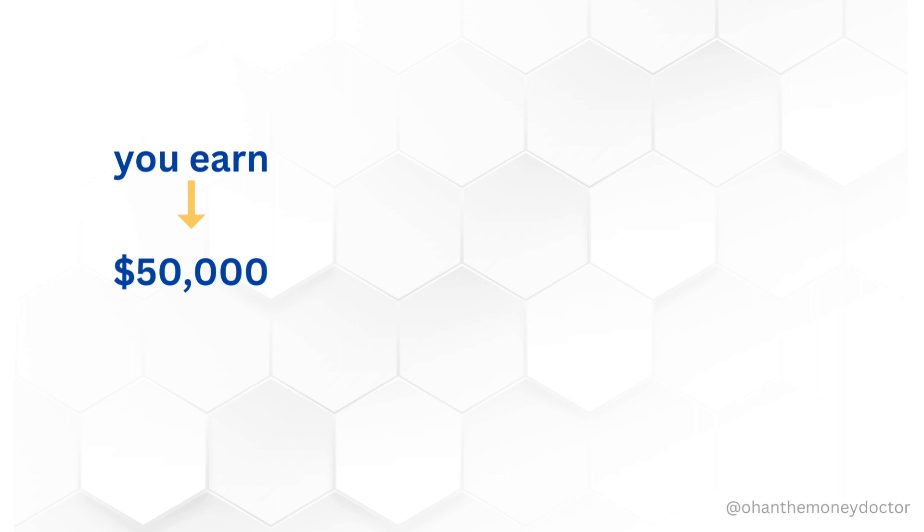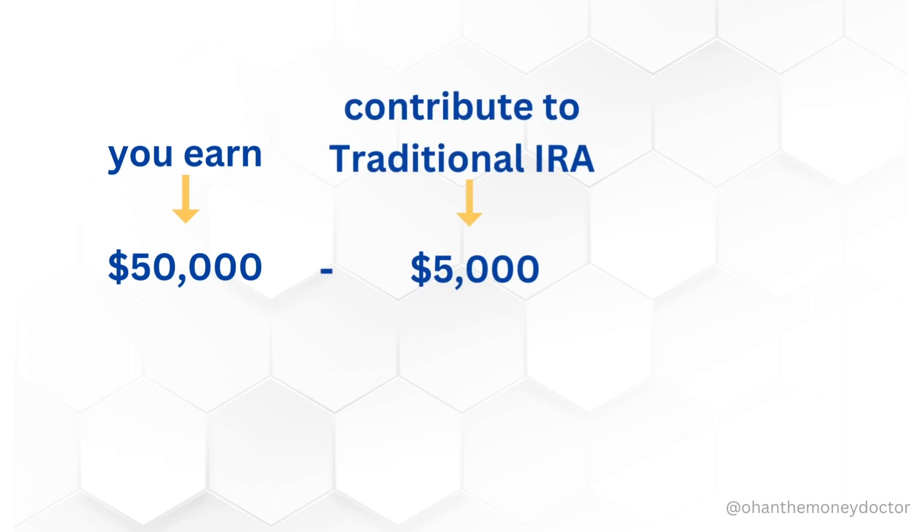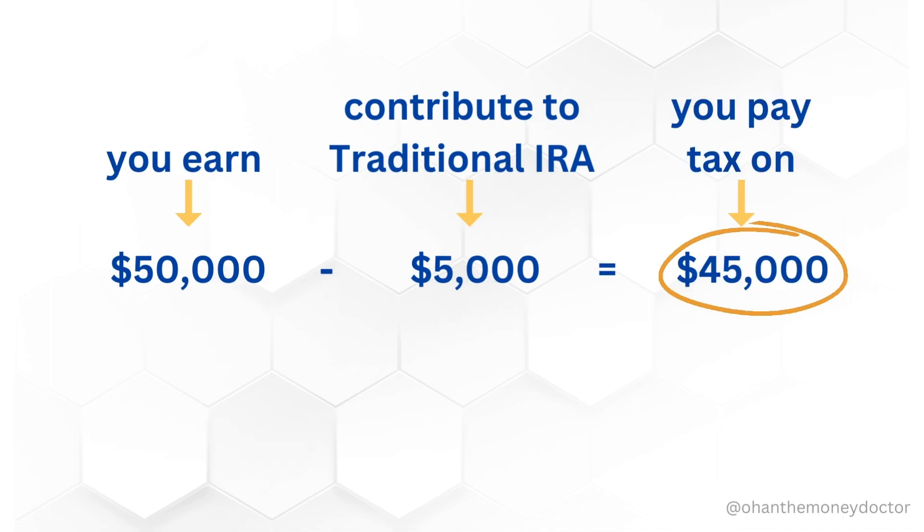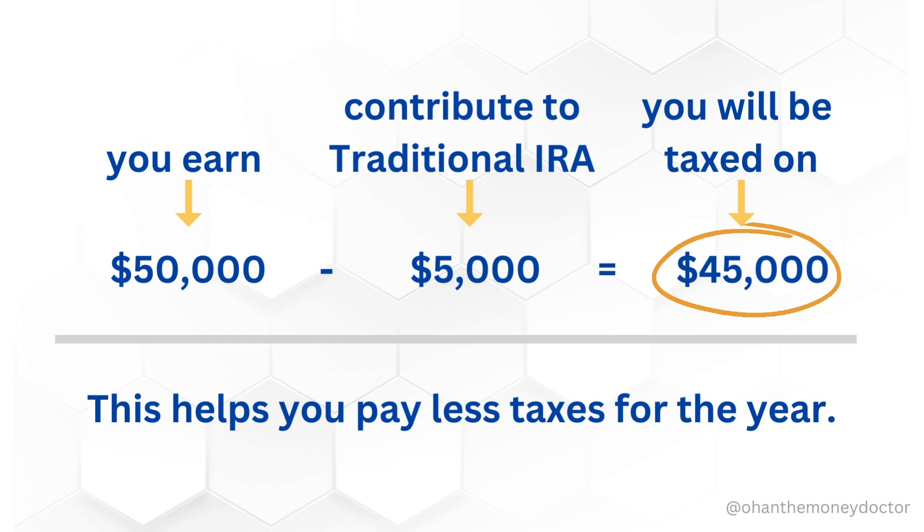How much you can deduct depends on factors like your income, tax filing status, and whether you have a workplace retirement plan like a 401k or 403b. Here is the catch: while you don't pay taxes on the amount you put into your traditional IRA this year, you will have to pay taxes on both the initial contributions and any gains when you withdraw the money in retirement. The challenge is that it is impossible to predict the exact tax rate during your retirement years.